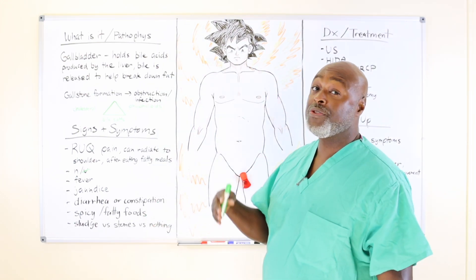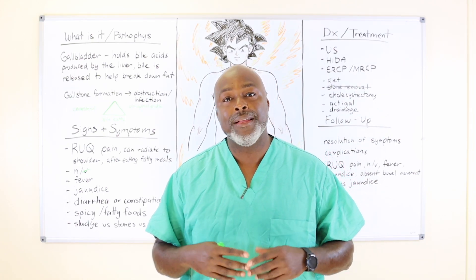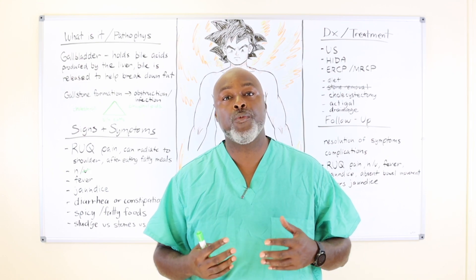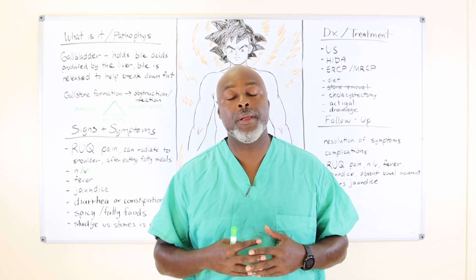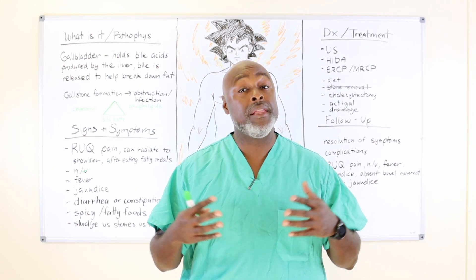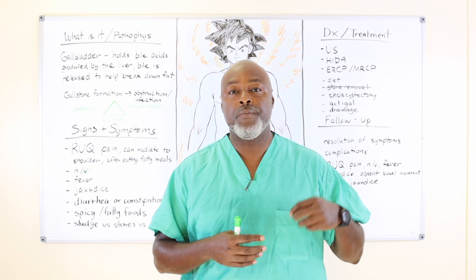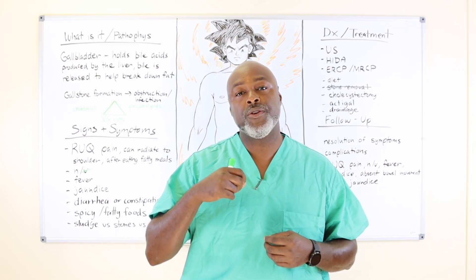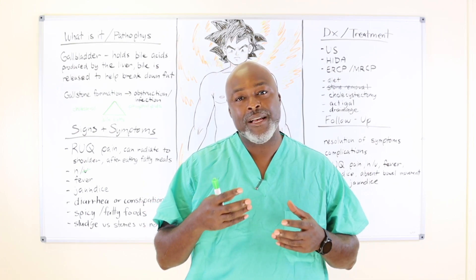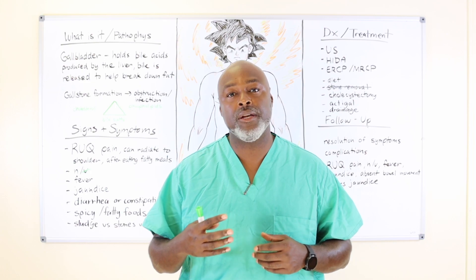Sludge versus stones versus nothing — you don't have to have anything in your gallbladder for it not to work; that's called biliary dyskinesia. Sludge and stones are a good way to judge how bad your gallbladder is and it's usually based on the amount of time it's been bad. The easiest way to think of it is bile is like water; when it turns into sludge, it's a pre-gallstone substance, kind of like motor oil, and then you have gallstones.